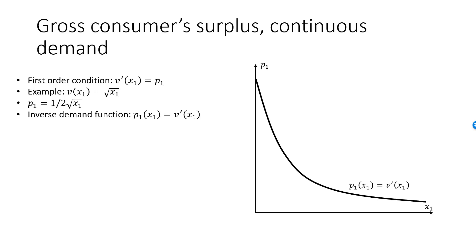Now here is the important point. When good 1 was discrete, we were able to find the gross surplus from the demand curve. We found that if the consumer chooses x1 units of good 1, then the gross surplus, V of x1, is equal to the area under the demand curve for x1 up to the optimal choice. Let's see if we can generalize this principle to the case where x1 is infinitely divisible. So x1 is now the optimal choice of good 1. Let's check if the gross surplus, V of x1, is still equal to the area under the demand curve.